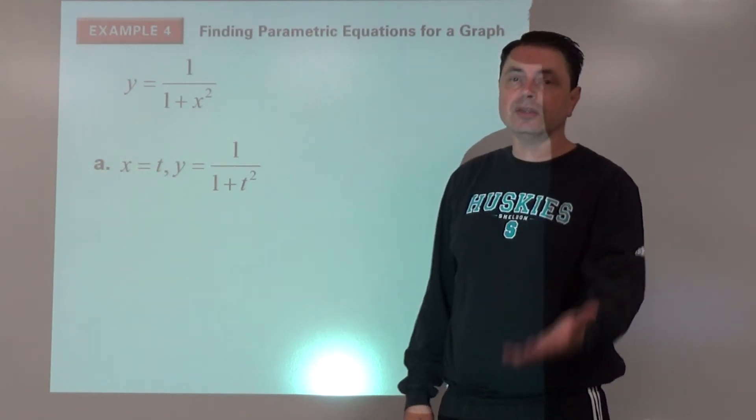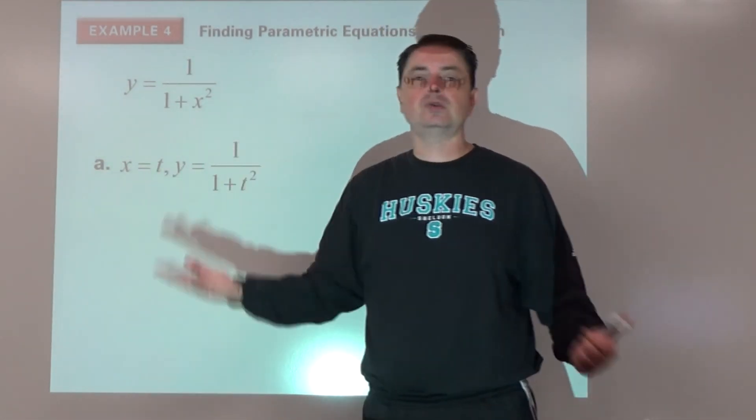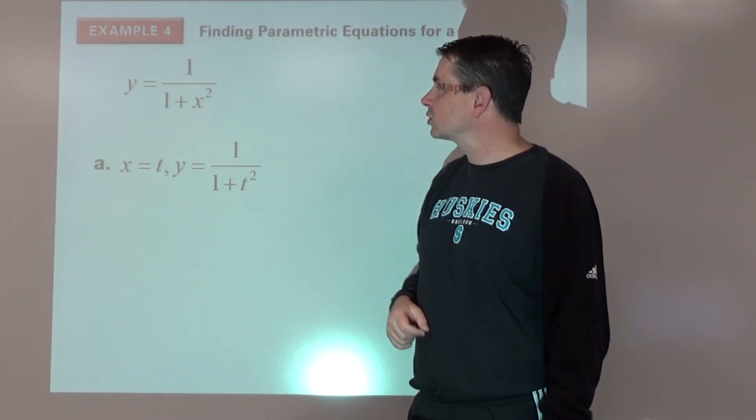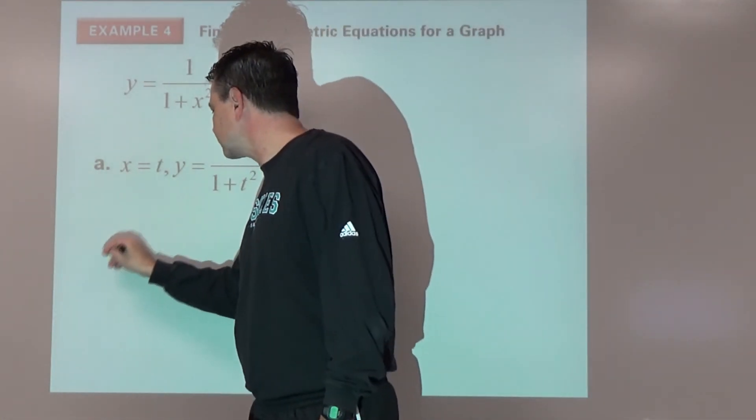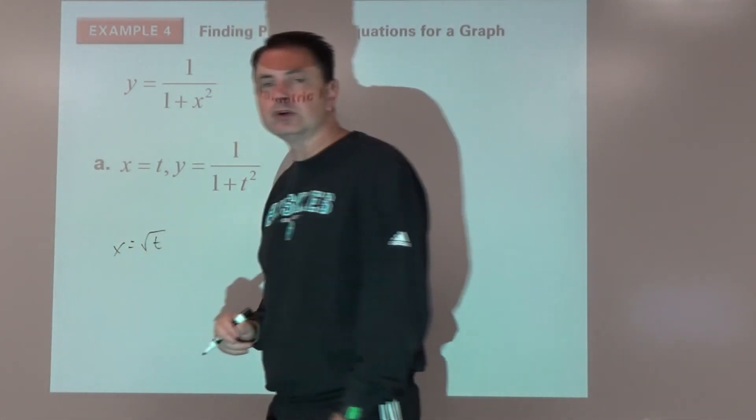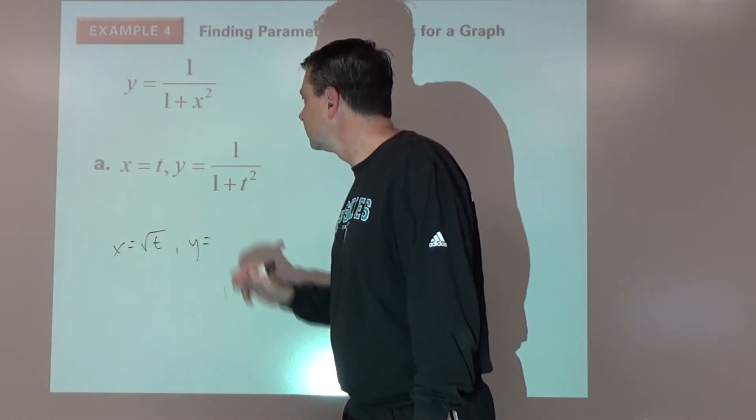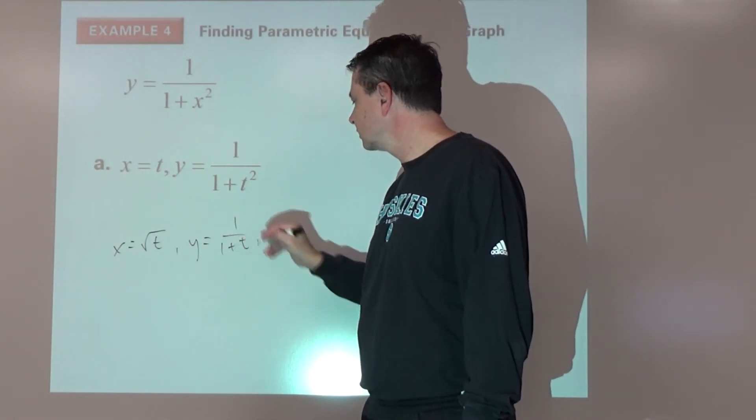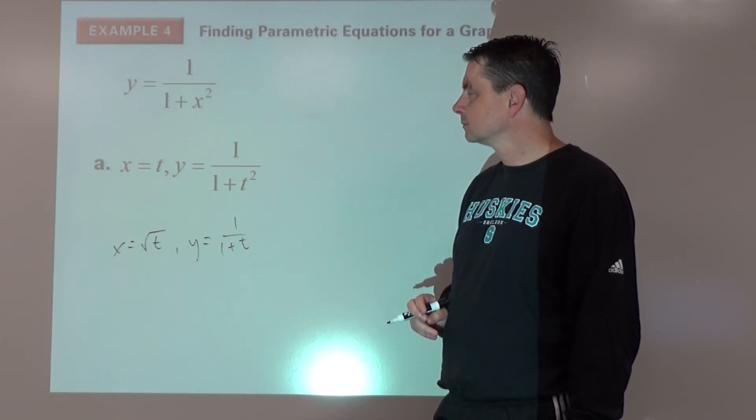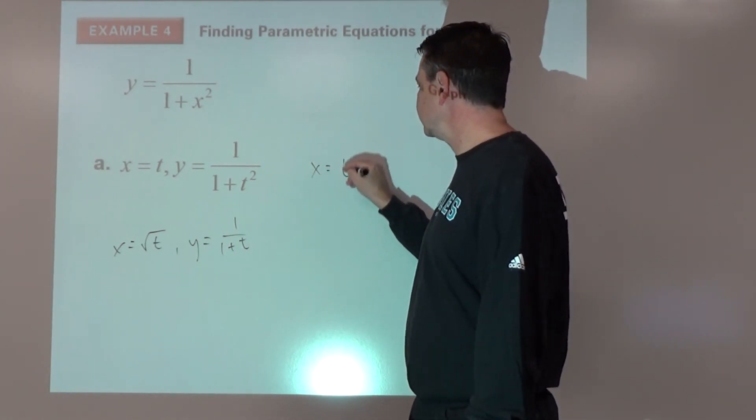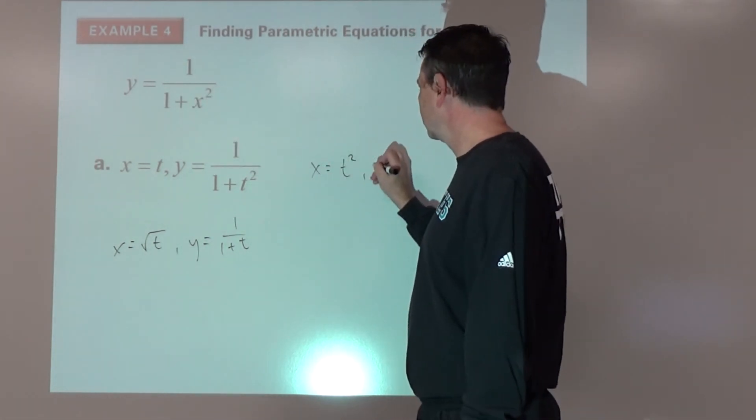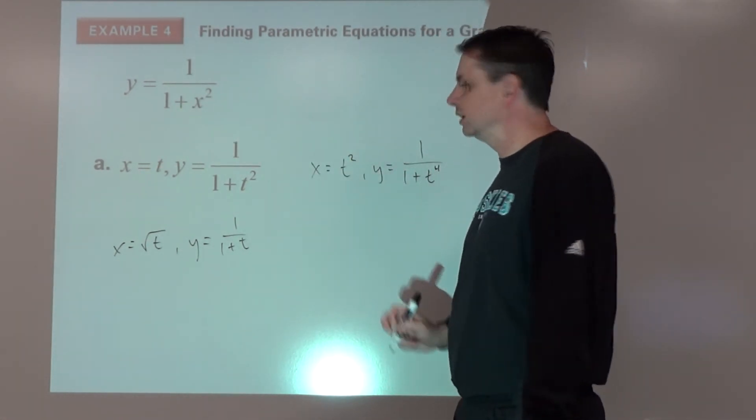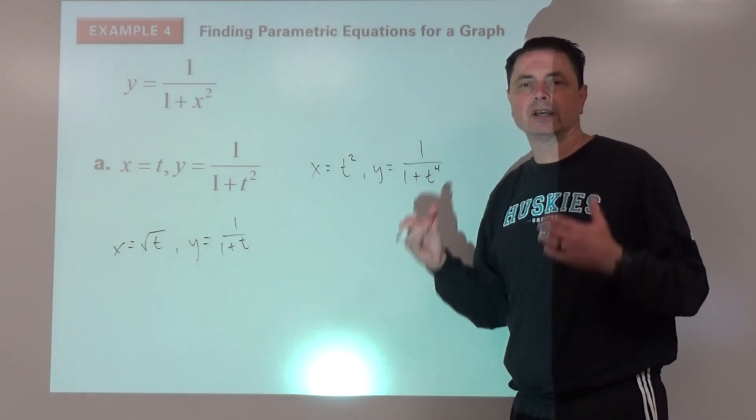If we needed to come up with another set, we could go something as simple as x = 2t and go from there. Or take advantage of what's going on here and say what would be something really easy to square. What if we said that x was √t? Then y would be, √t squared is t, so y would be 1/(1 + t). Or we could go x = t². And then we would get y = 1/(1 + t⁴). So there's lots of different sets that we could come up with.